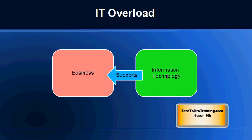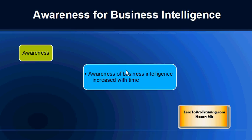It takes a lot of time to transfer requirements to IT and have them create a custom report — the turnaround is not very fast. Business wants the ability to do any kind of ad hoc inquiries on the system, and this is another reason why business intelligence technology became very popular. The awareness of the importance of business intelligence has increased with time, and this has a lot to do with the fast adoption of business intelligence technology.